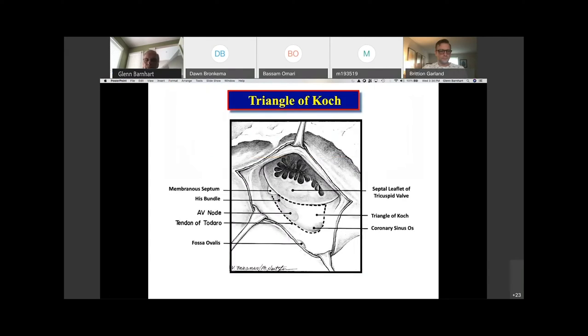So if we look at the triangle of Koch, which is this area here, it is an area that's bordered by the tricuspid valve and the tendon of Todaro. The AV node lives inside that along with the His bundle right in here. And the triangle is completed by this line that runs from this point down to here. And the coronary sinus ostium lives inside there.